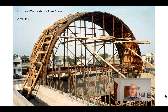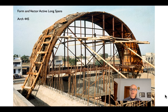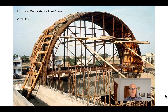In these lectures, we're going to look at two types of long spans: form active and vector active. We've looked at both of these types of structures before. Very early on when we were looking at simple structures, we looked at form active structures like arches and cables because we could assume they were all in one state of stress — compression or tension. Vector active structures, remember, are trusses. This week we'll look at vector active structures that are two-way instead of one-way, what we call space frames.